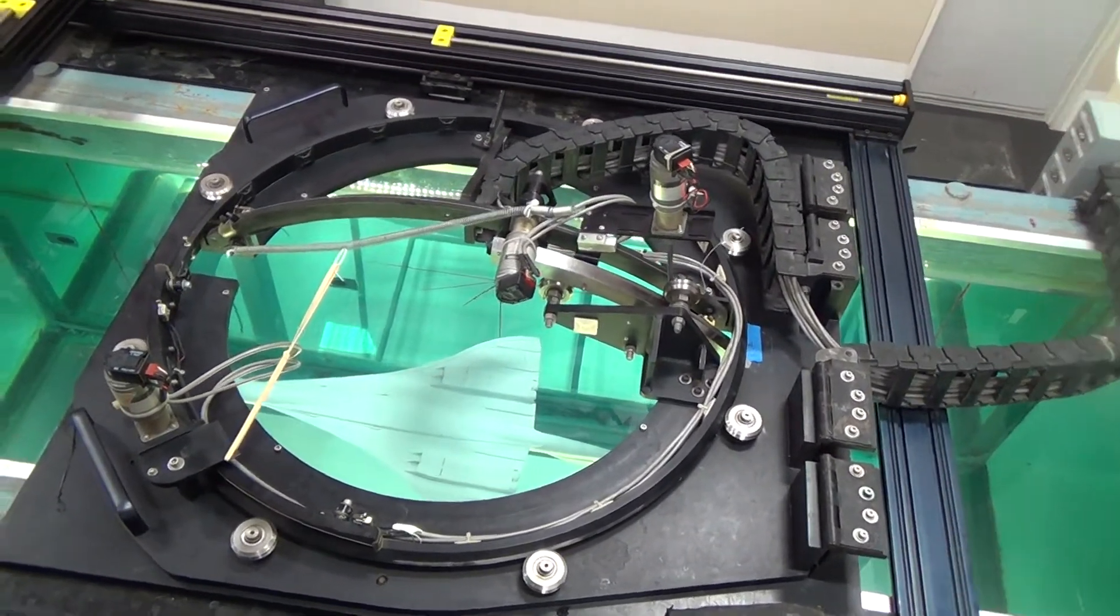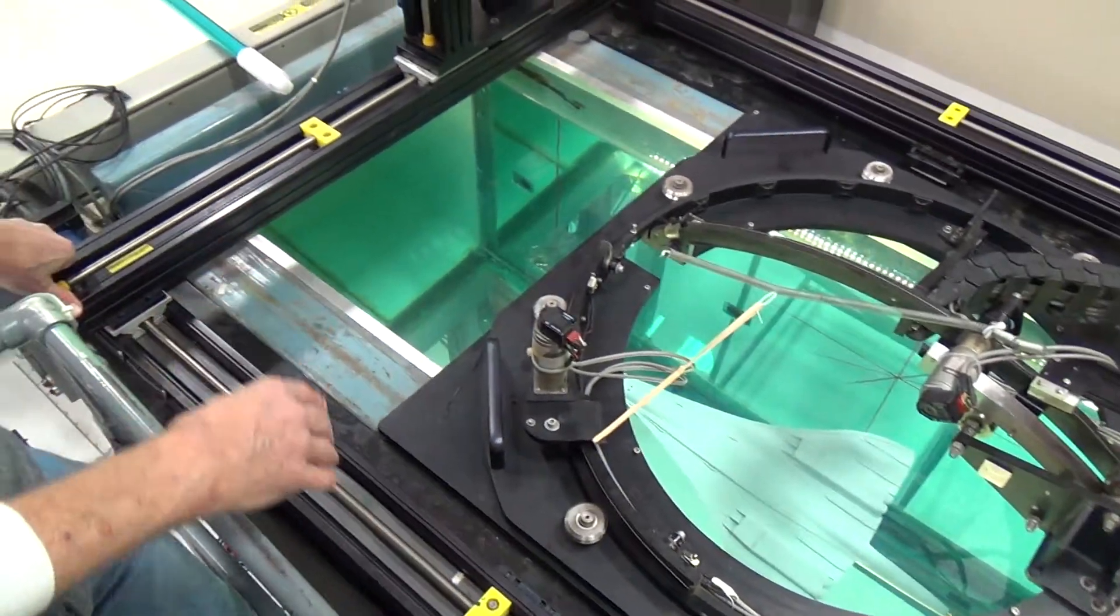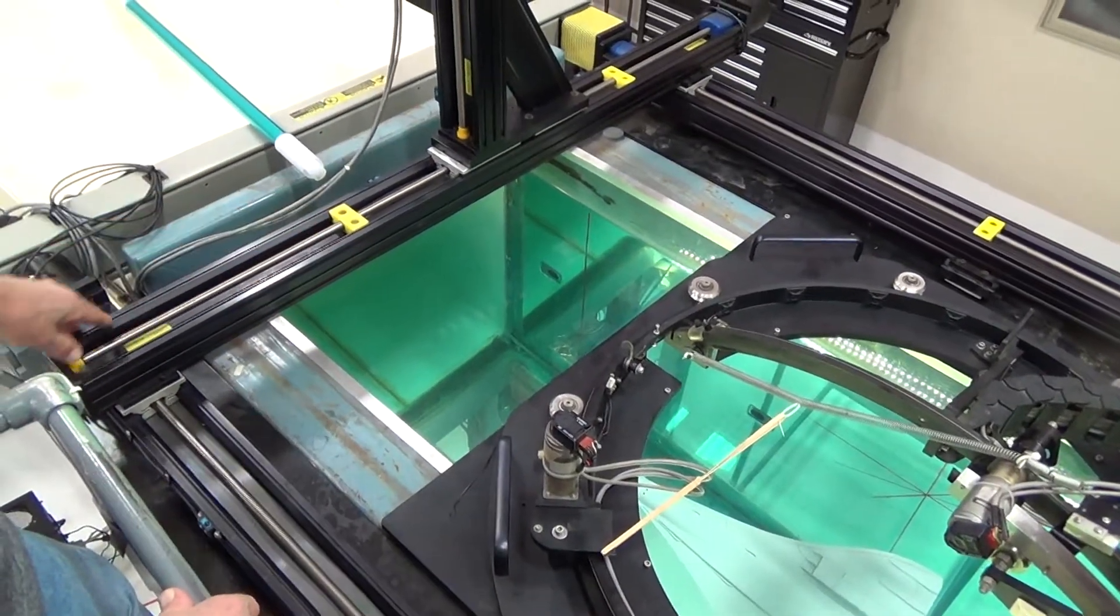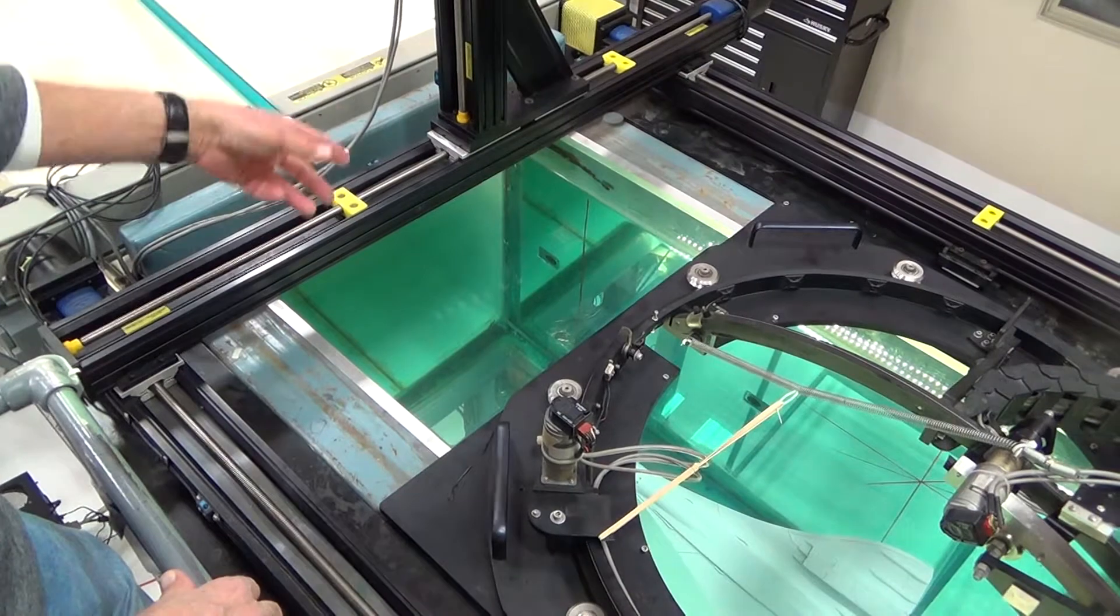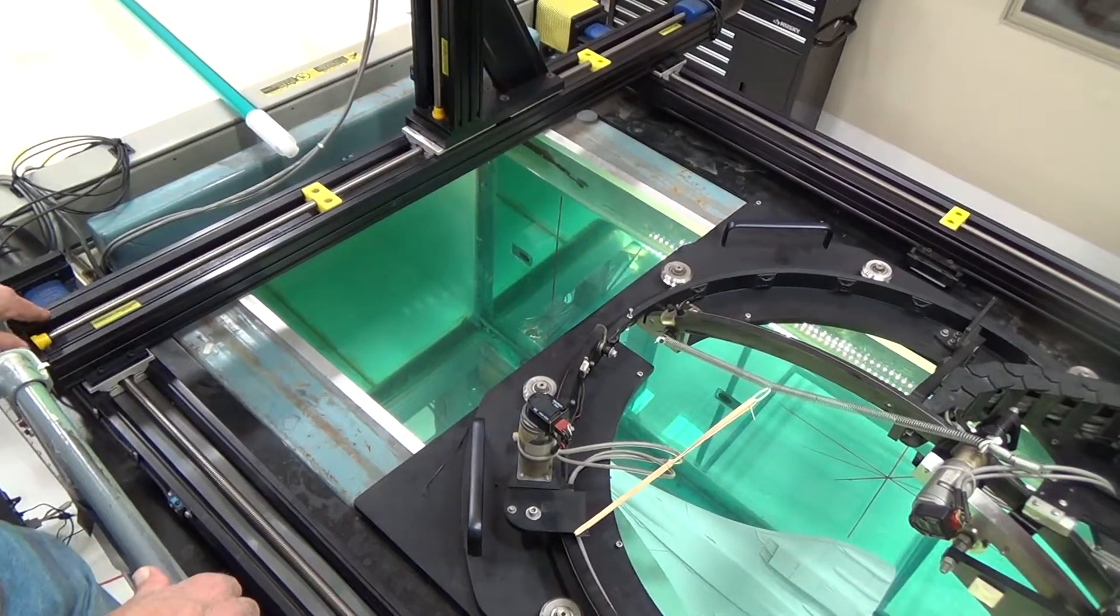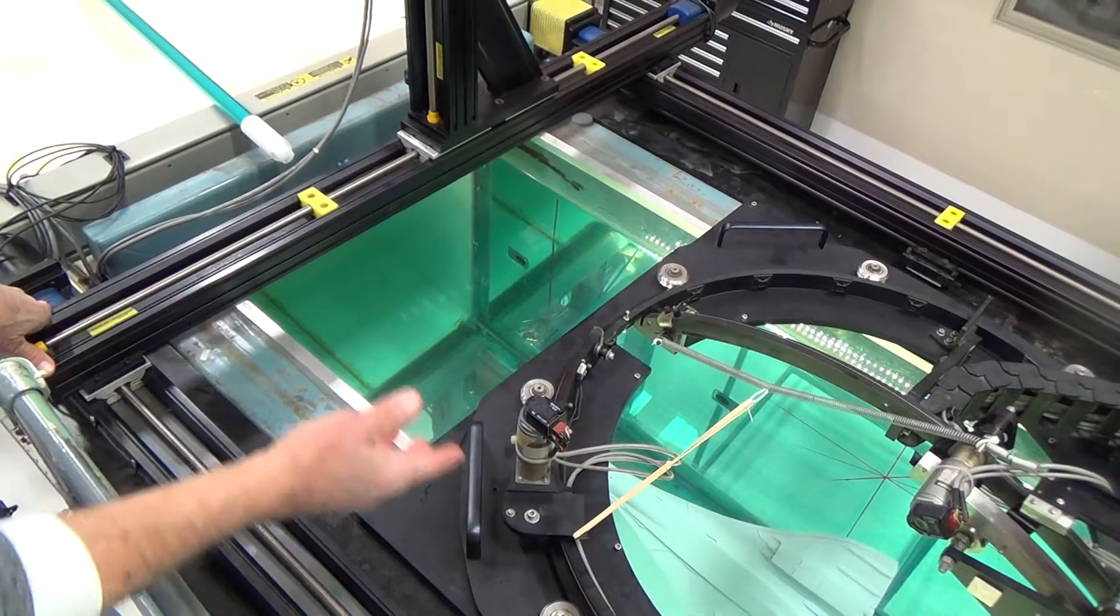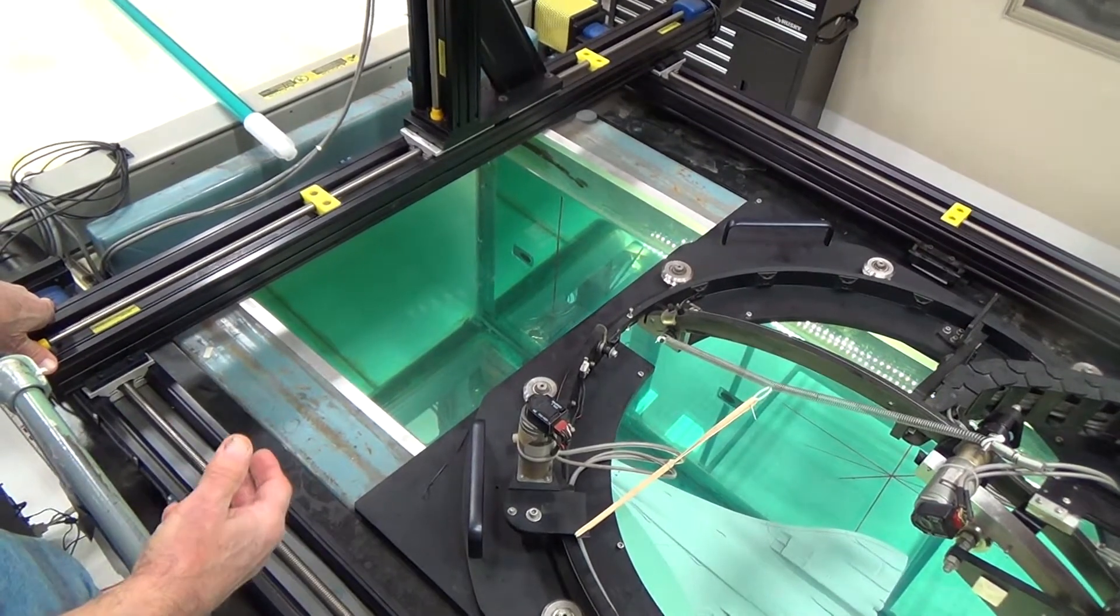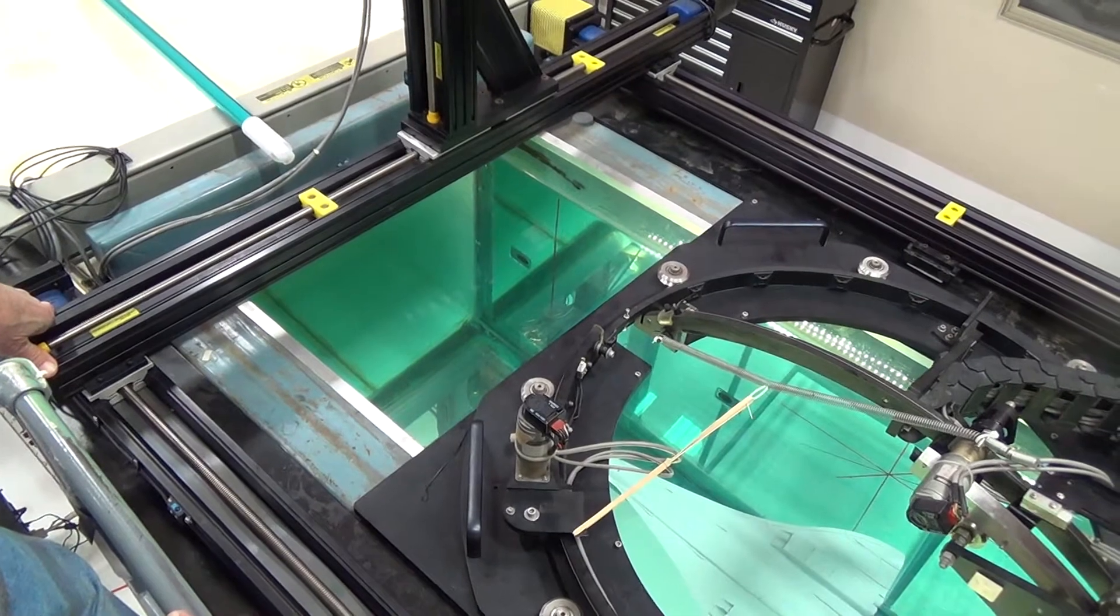And we also have a traversing mechanism here where we can put a dye probe on and move it in three dimensions to explore areas of the configuration where we might not initially know that there are interesting flow structures.